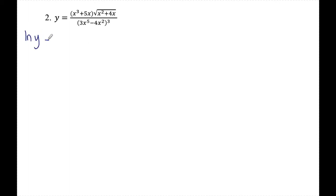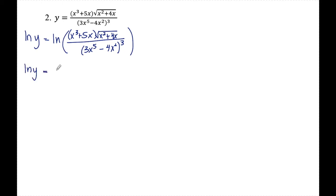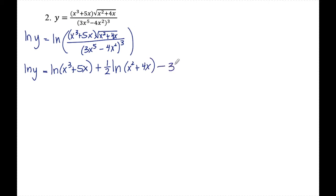Example two: taking the derivative of this expression without logarithmic differentiation would require a quotient rule, a product rule, and two chain rules all in one — a gigantic mess. So again I use logarithmic differentiation. I start by taking ln of both sides, then expand the right side using log properties: I make the multiplication into addition, rewrite the square root as an exponent of one-half, and bring that half to the front, giving one-half·ln(x² + 4x). Then I subtract 3·ln(3x⁵ − 4x²), bringing the exponent 3 to the front all in one step.